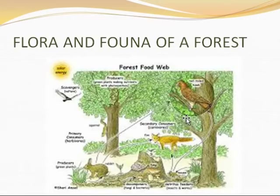In the shrub layer, you can get shrubs, flowers, fruits, berries, and bamboos. The animals you can find in this layer include butterflies, dragonflies, bees, and ants. In the herb layer, it consists of different herbs, flowers, fruits, ferns, and mosses. Animals such as rabbits, snakes, and mongooses are present here.